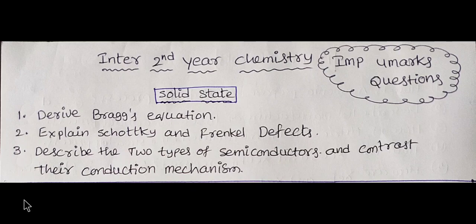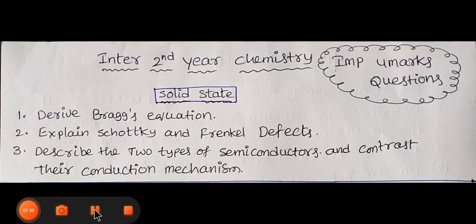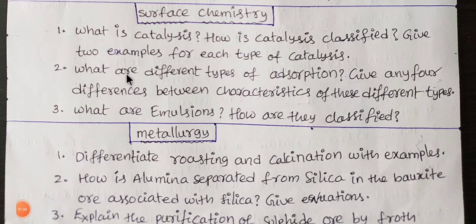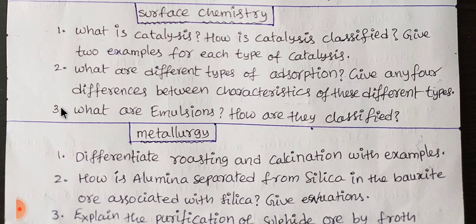Next chapters: the next one is surface chemistry. In surface chemistry, you have three topics. First one is catalysis and types of catalysis. Second one is adsorption — physical adsorption and chemical adsorption differences. Third one is emulsions. Emulsions are two types: water in oil and oil in water. These three questions have a chance for maximum treatment.